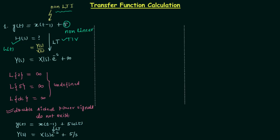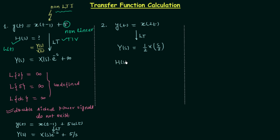Now let's move to problem number 2. In this problem, y(t) = x(2t). This is the system relationship and we are required to calculate the transfer function. Taking the Laplace transform gives us Y(s) = (1/2)·X(s/2). Here also you cannot get Y(s)/X(s) because we have X(s/2), not X(s). Therefore the transfer function calculation is not possible. From next time, first check if the system is LTI or non-LTI before taking the Laplace transform.